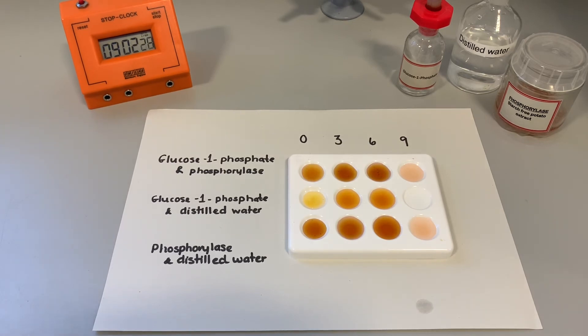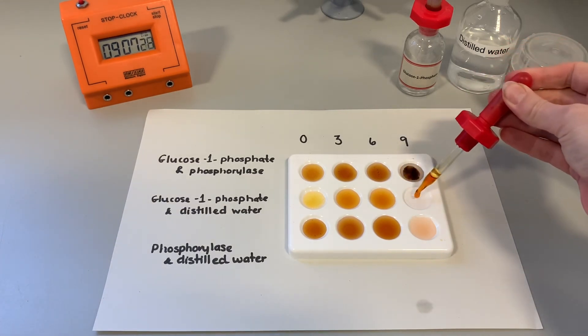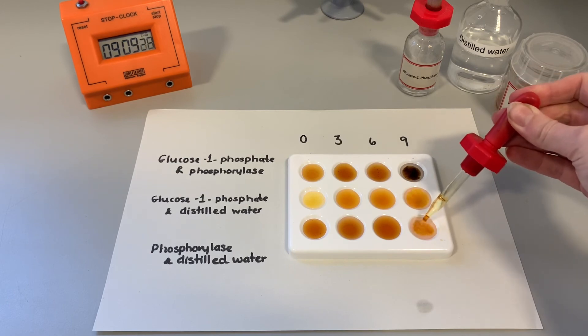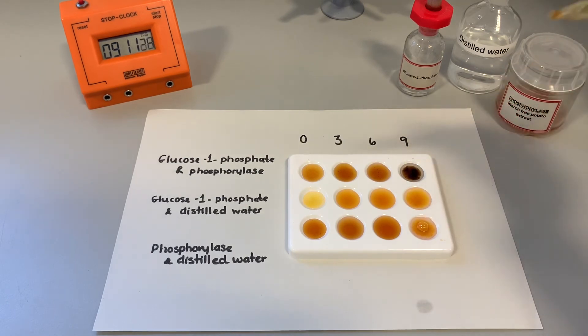Let's have a look at nine minutes and see if we have any starch present. Now you can see there we've got a color change in that top row, which shows that starch has been formed by the action of the enzyme phosphorylase on glucose 1-phosphate.